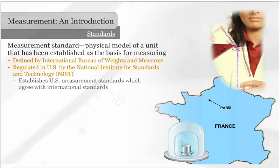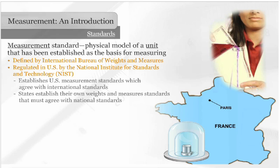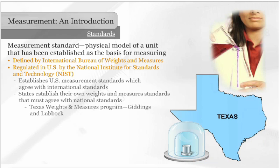In addition, almost all states establish their own weights and measures standards, which must agree with the national standards. The Texas Weights and Measures Program operates labs in Giddings and Lubbock. These laboratories calibrate all types of weights and instruments to meet NIST guidelines.